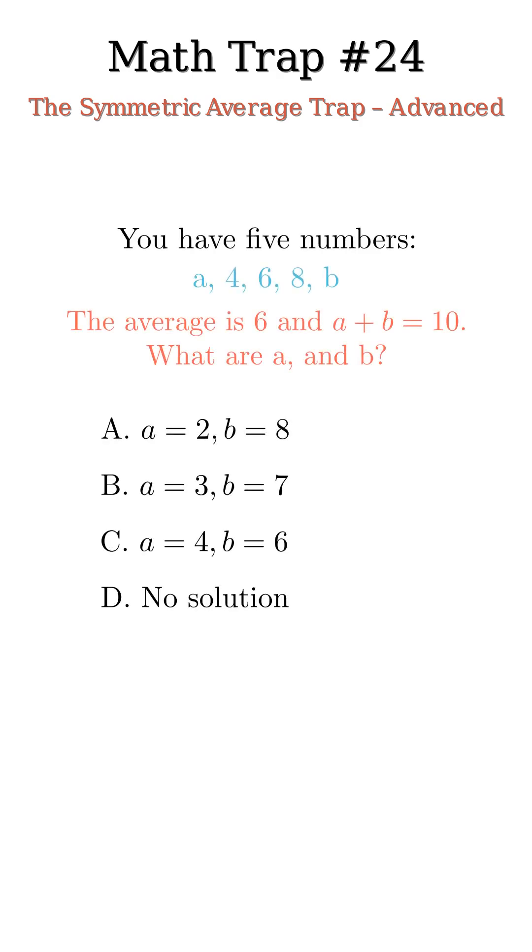You are given five numbers: A, 4, 6, 8, and B. The average is 6, and you're told A plus B equals 10. What could A and B be?